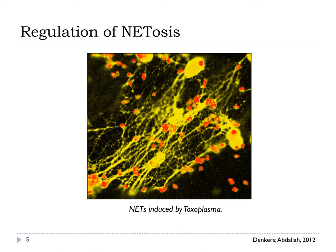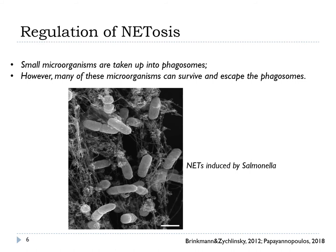In the figure we have NETs induced by Toxoplasma. Human peripheral blood neutrophils were incubated with Toxoplasma in the presence of an inhibitor. The cells were fixed and marked with antibodies, seen in red, and the NET was visible in yellow. Small microorganisms are observed in the phagosomes; however, many of these microorganisms can survive and escape. Therefore, NETosis may be reserved for small virulent microorganisms. For example, enteropathogenic virulent bacteria induce NET formation, while non-virulent probiotic bacteria do not. In the figure we have Salmonella, a bacteria that escapes the phagosome, and we can observe that bacteria are attached to the NET.